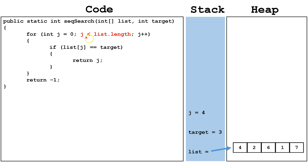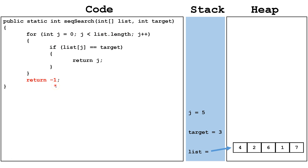Now we're going to check: is j less than list length? 4 is still less than the list length, which is 5, so we're going to continue. We're going to check list index j — j is 4, so the value in index 4 is 7. Does 7 equal 3? It does not, so we're going to skip this block of code. Now we go down to the end of the for loop, increment j by 1, j is equal to 5. Now we see 5 is not less than the list length, because 5 is not less than 5. So we terminate the for loop, and we return negative 1.